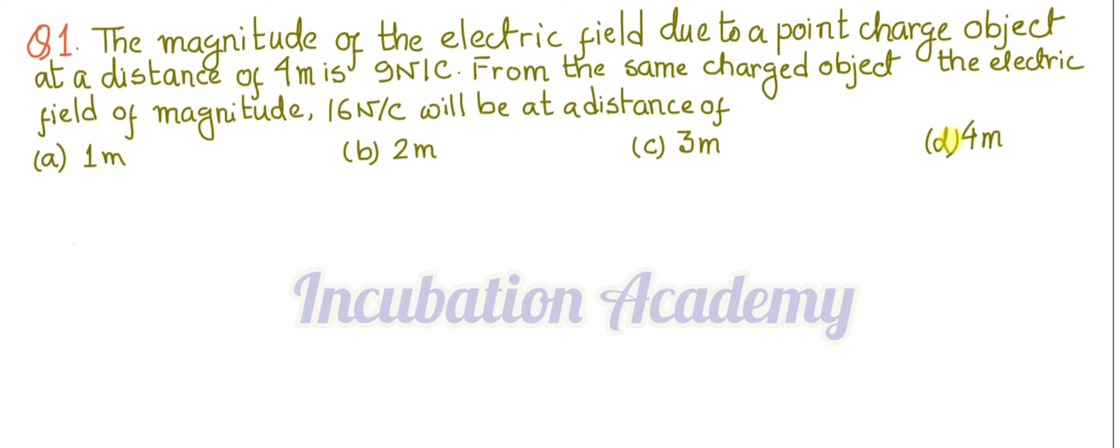The magnitude of the electric field due to a point charged object at a distance of 4 meter is 9 newton per coulomb. From the same charged object, the electric field of magnitude 16 newton per coulomb will be at a distance of 1 meter, 2 meter, 3 meter, or 4 meter.